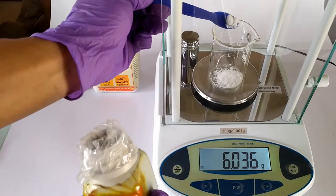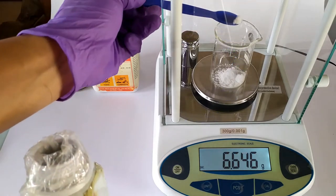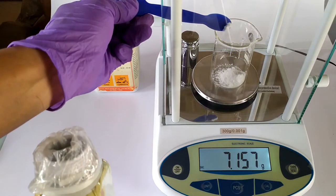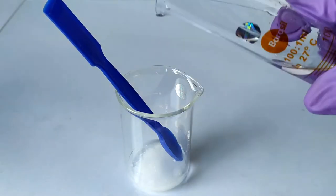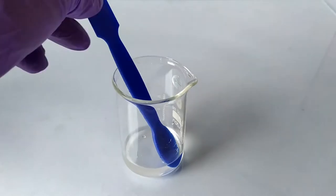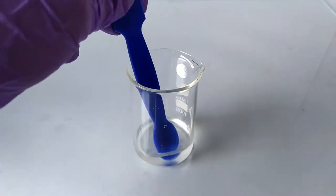To begin the protocol, weigh 5 to 7 grams of potassium iodide in the first beaker. I've taken 7 grams here. Dissolve the iodide in about 10 ml of distilled water. Keep this beaker aside.